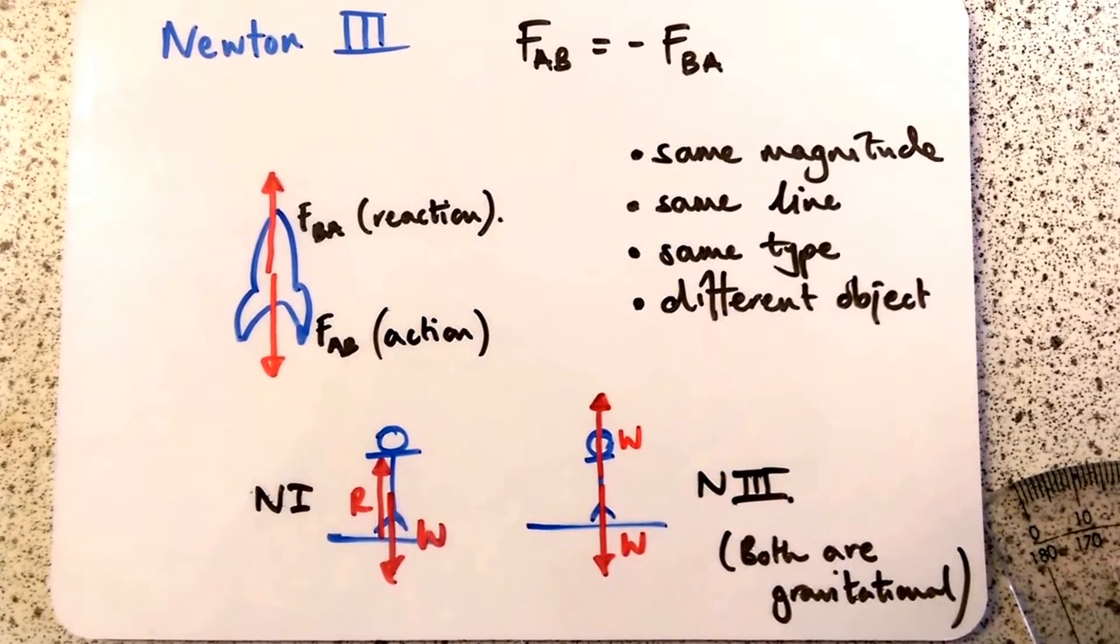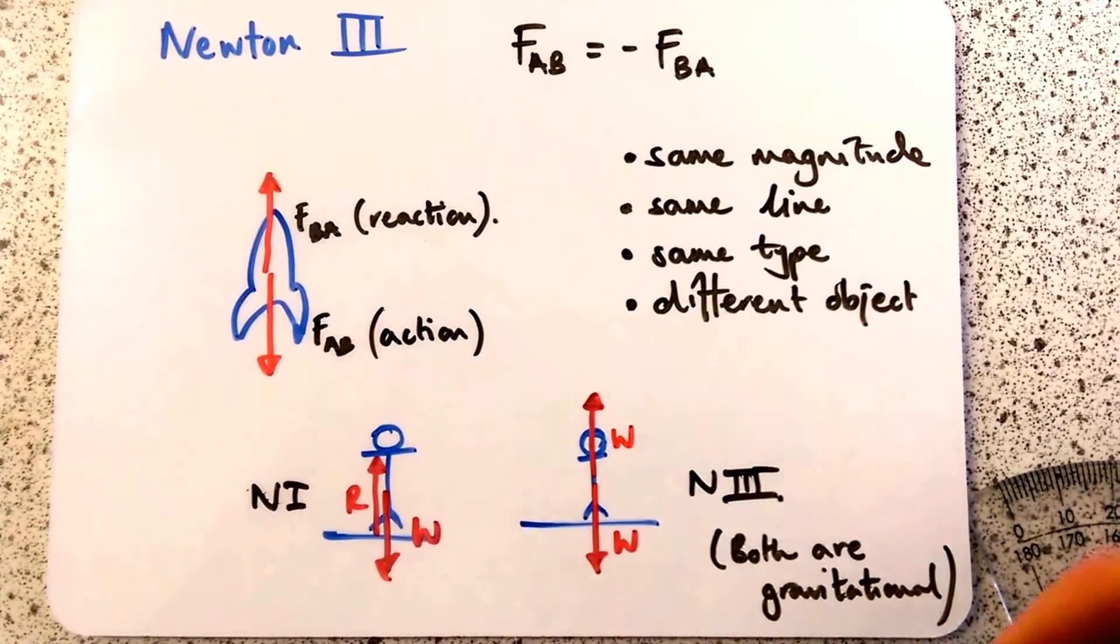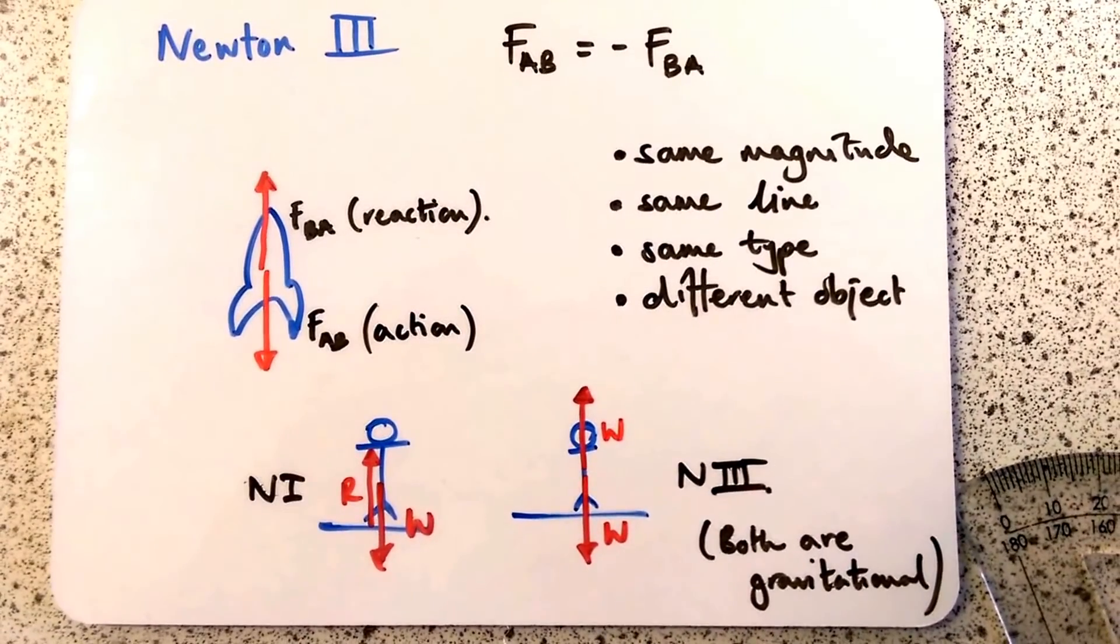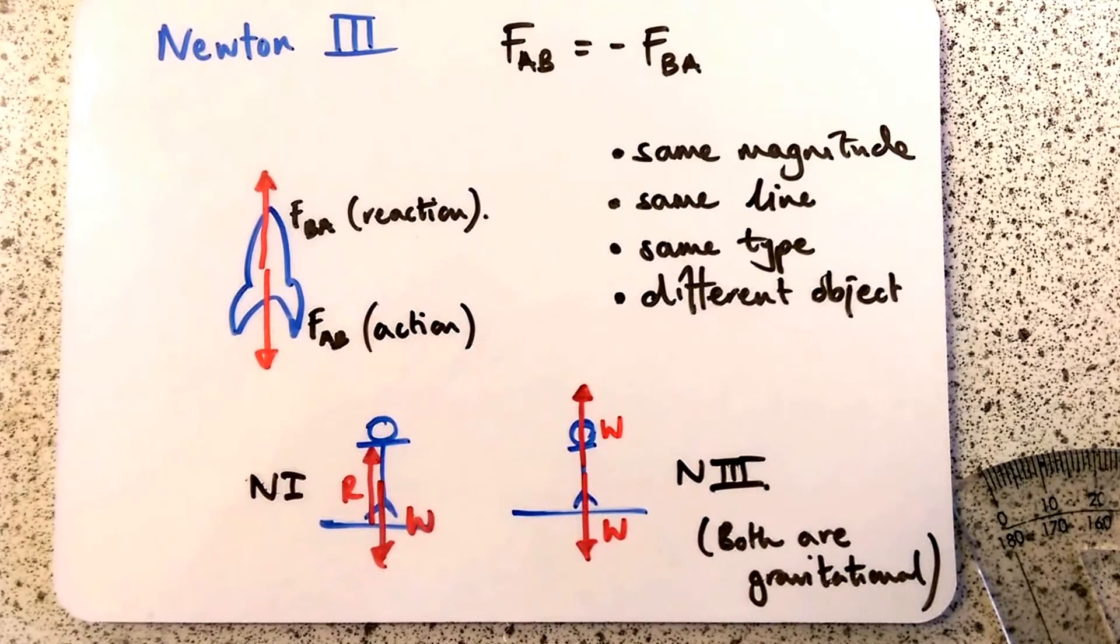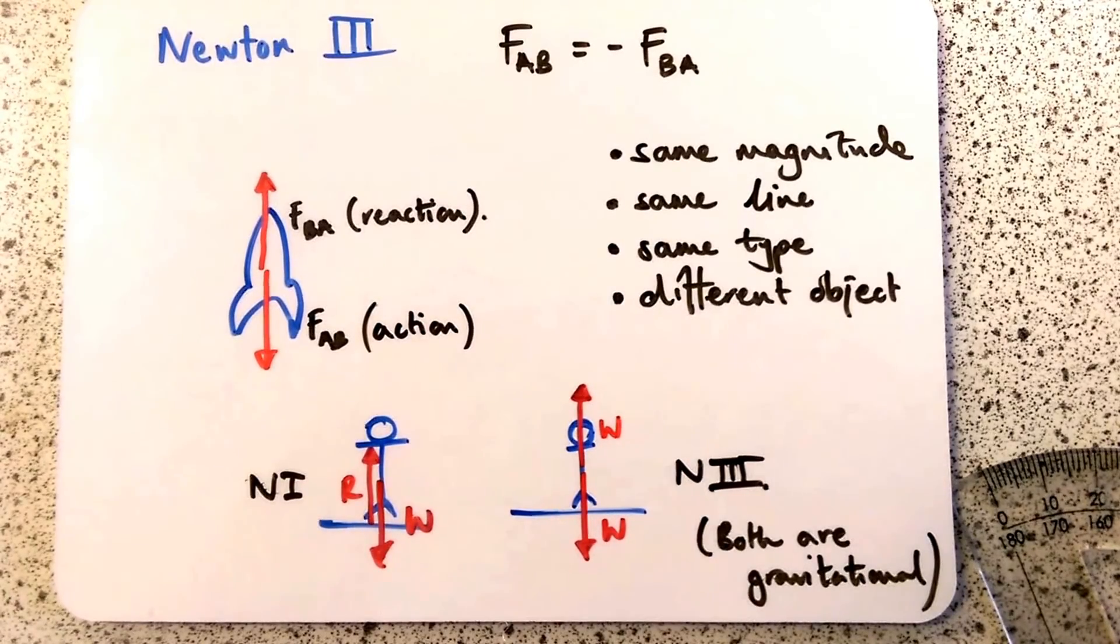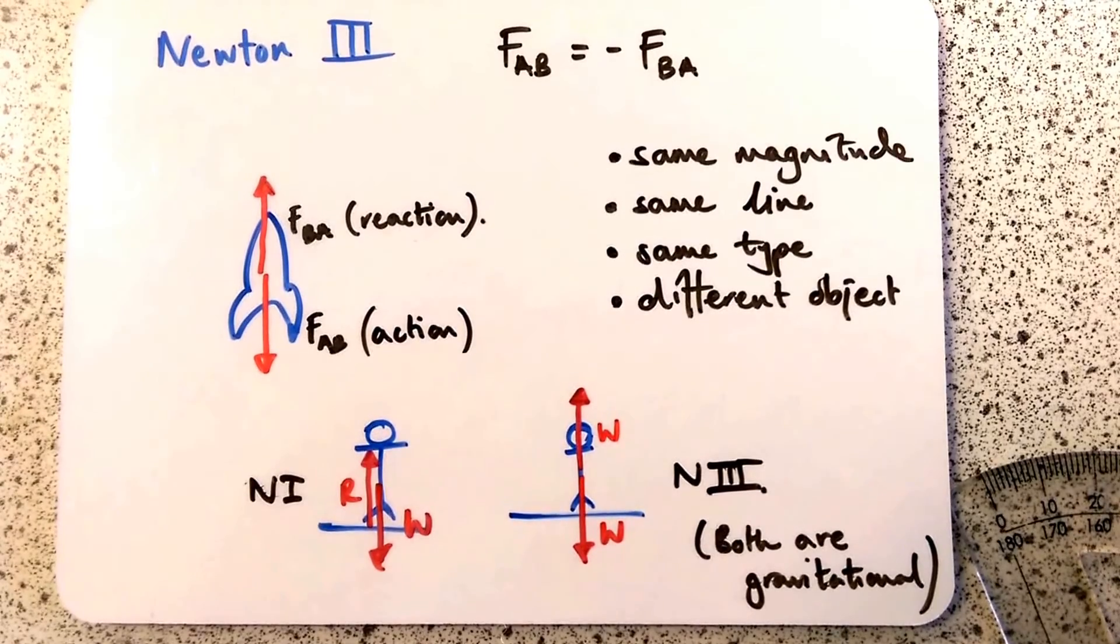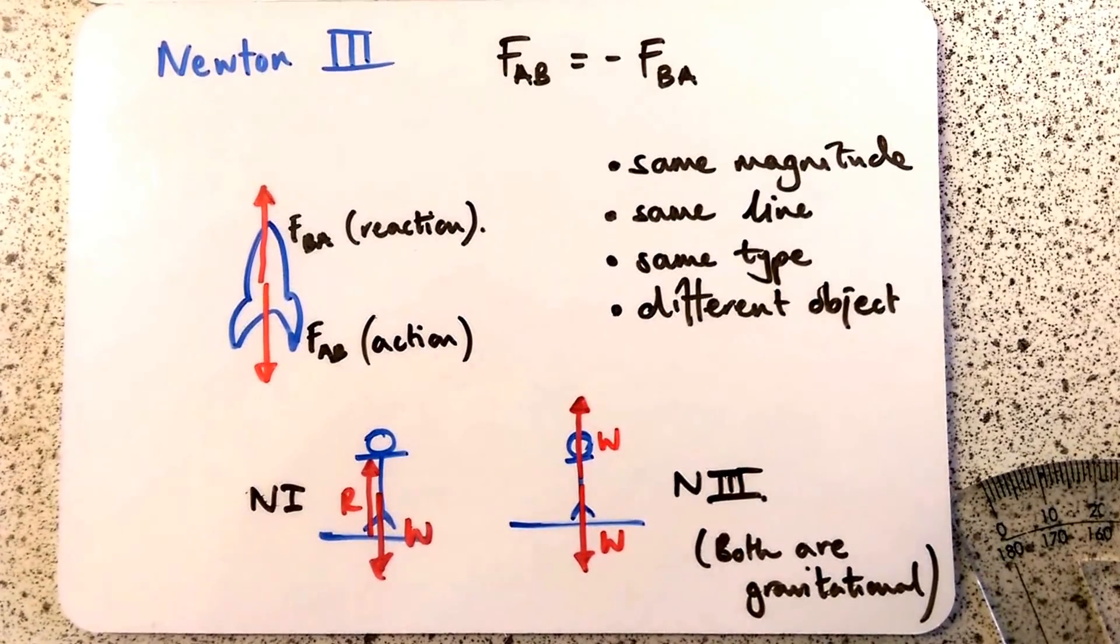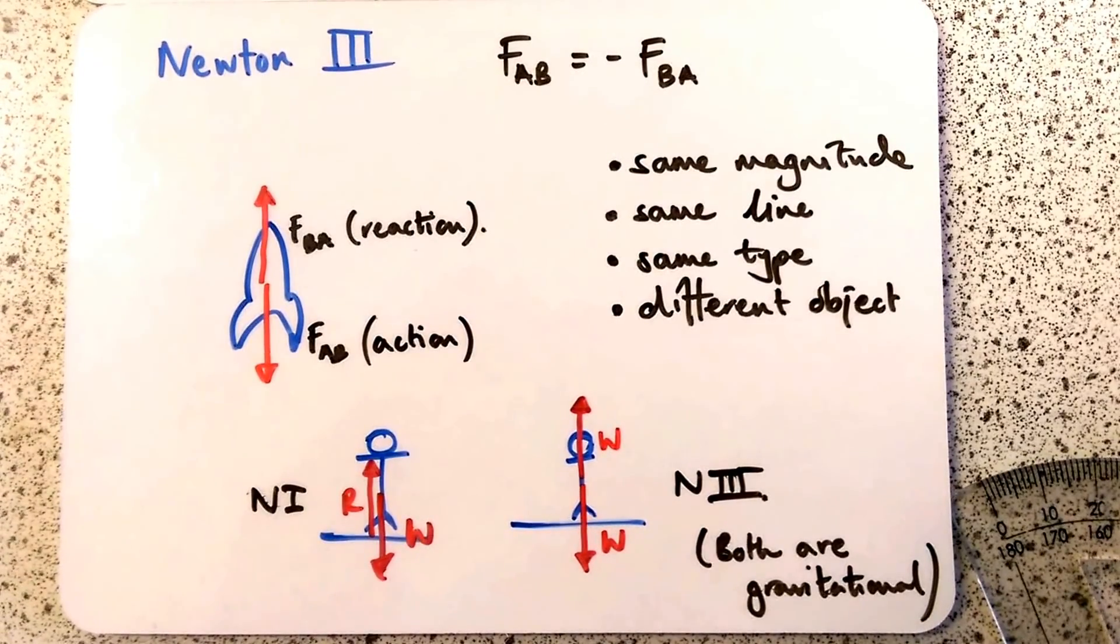The Newton III pair is actually the boy's gravitational force on planet Earth. It's a Newton III pair this time because both are gravitational - they're both the same type of forces. I hope that helped. Please do like, share and subscribe.